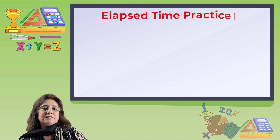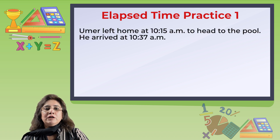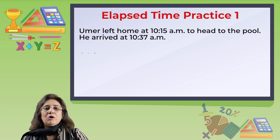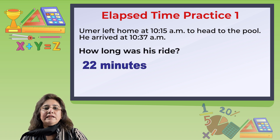Elapsed time practice. Umar left home at 10:15 a.m. to head to the pool and arrived at 10:37 a.m. How long was his ride? His ride was 22 minutes.